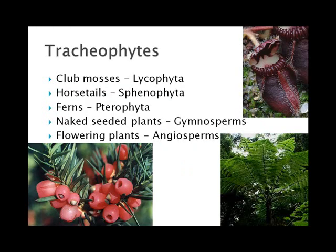The tracheophytes — remember, these are the ones that have vessels — come in five big groups: club mosses, horsetails, ferns, naked seeded plants, and the flowering plants. Or, in order: lycophyta, sphenophyta, pterophyta, gymnosperms, and angiosperms. This is also the order in which they showed up in the fossil record, going from less complex to more complex lifestyles.